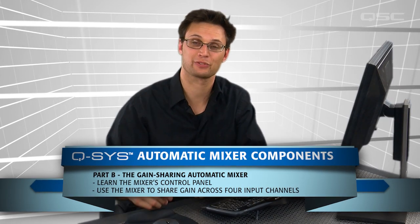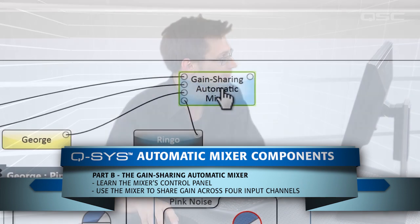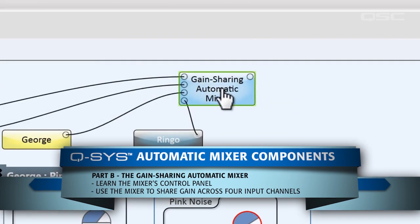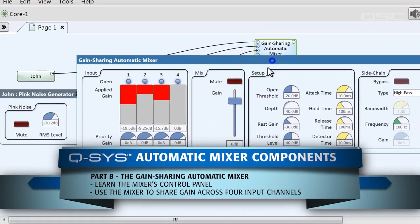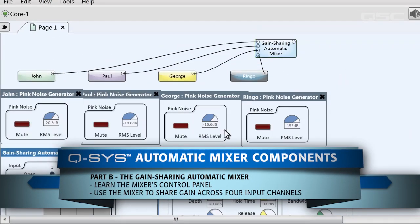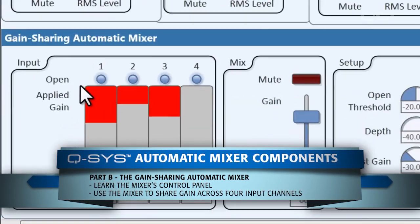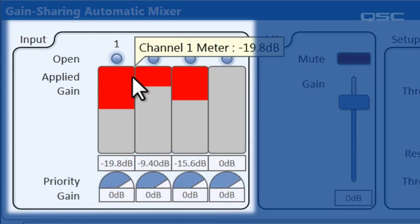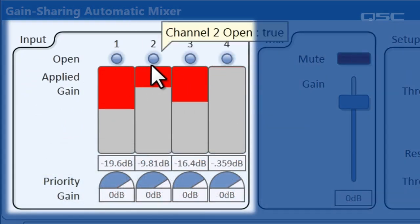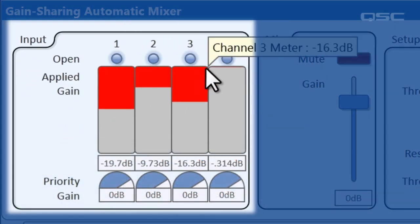Welcome back. Let's continue from where we left off. Now let's look at what's happening in the mixer itself. These are our four inputs. Each has an LED at the top that tells us whether or not the gate is open.